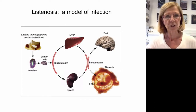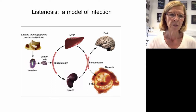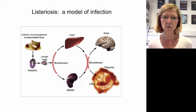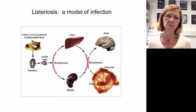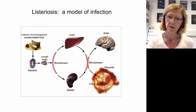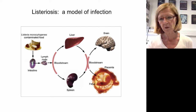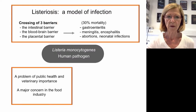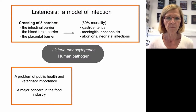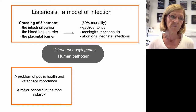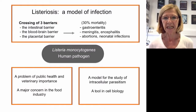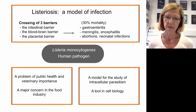Listeria infection starts by ingestion of contaminated food products. The bacteria reach the intestinal lumen, cross the intestinal barrier, and disseminate to deeper organs — in pregnant women to the placenta, in immunocompromised people to the brain — generating brain infection, premature deliveries, or abortions. Listeriosis is a problem of public health, of veterinary importance, a major concern in the food industry, and Listeria is a model for the study of intracellular parasitism, truly a tool in cell biology.